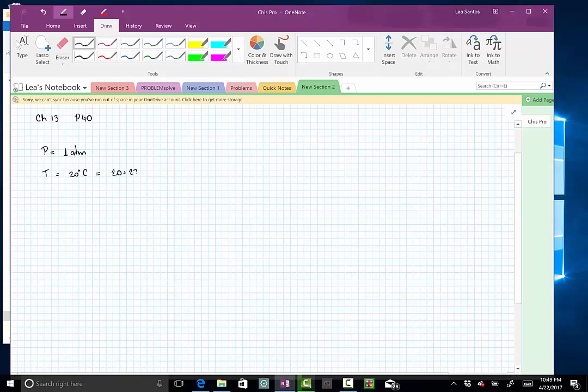write this in Kelvin. Remember, when dealing with ideal gas and PV equals nRT, we write temperature in Kelvin. So I'll call this P1 and this is T1. I do not know the volume of the initial balloon, so I'll just write it as V1.